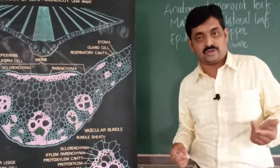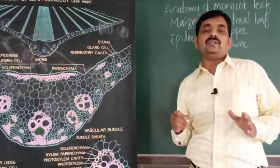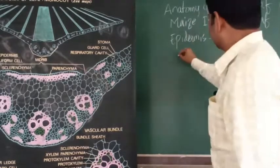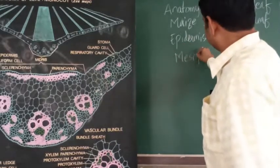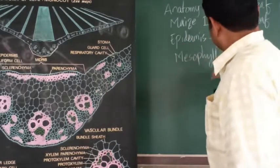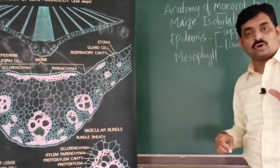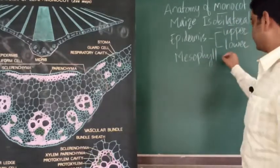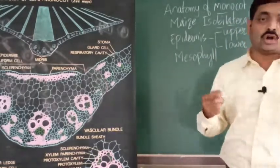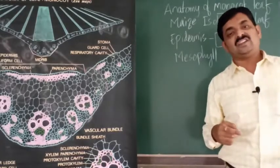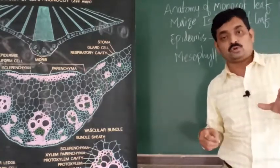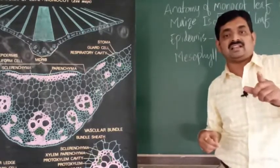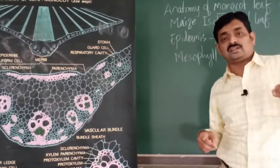Stomata are involved in transpiration. Between the upper and lower epidermis there is a tissue called mesophyll. This is the main tissue of the leaf. The mesophyll tissue of monocot leaf is not differentiated — it is not classified as palisade and spongy.